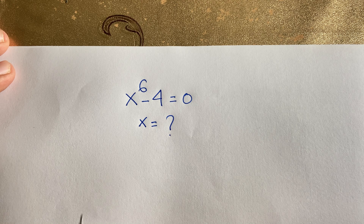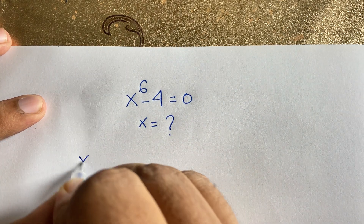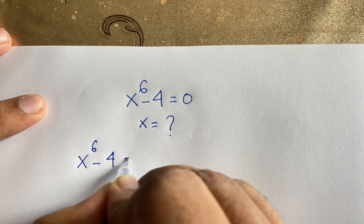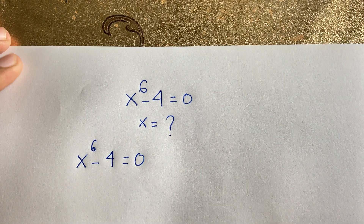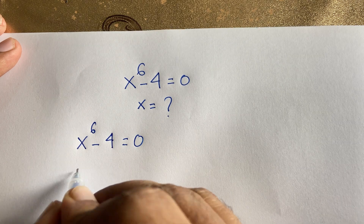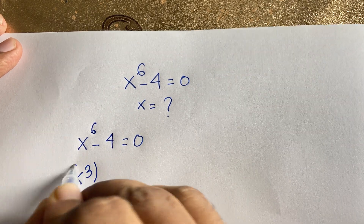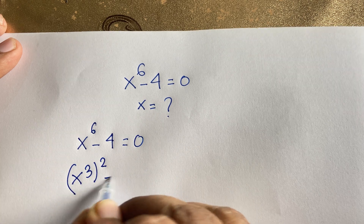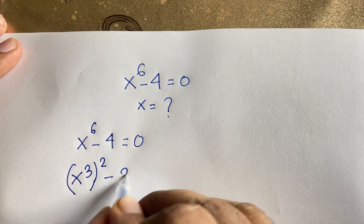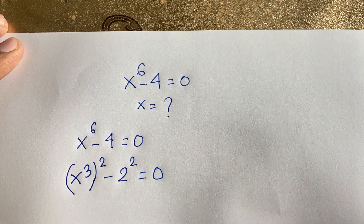Our question is x to the power 6 minus 4 is equal to 0. I can rewrite x to the power 6 as (x to the power 3) whole to the power 2, and 4 as 2 to the power 2, so: (x³)² minus 2² equals 0.